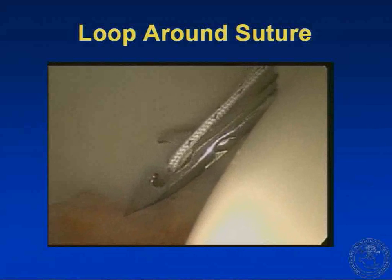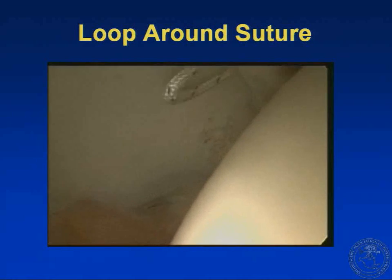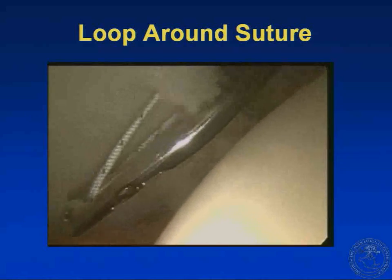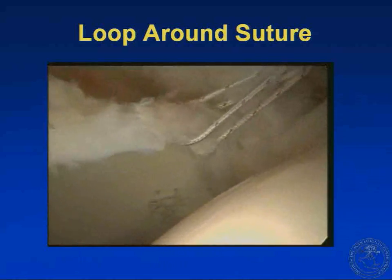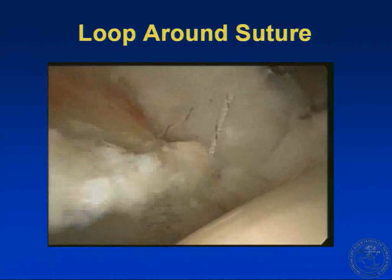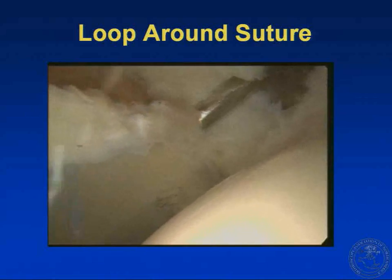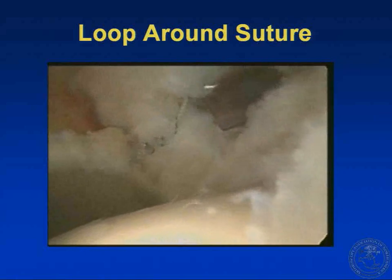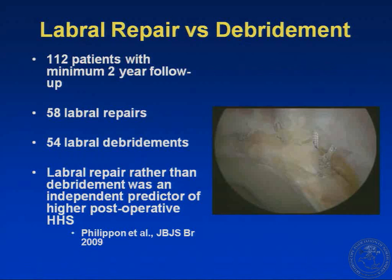For the loop-around suture, one limb of the suture is passed underneath the labrum, and the suture retriever is passed over the labrum, looping it around, followed by standard knot-tying. This can be helpful where there is a somewhat attenuated or hypoplastic labrum in an area where you're concerned about passing through the labrum. It is straightforward but may be less anatomic than a mattress-type stitch.